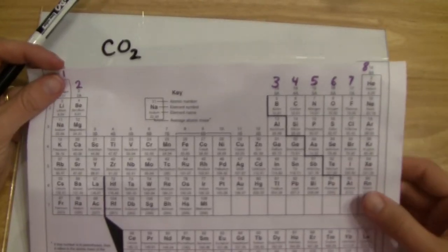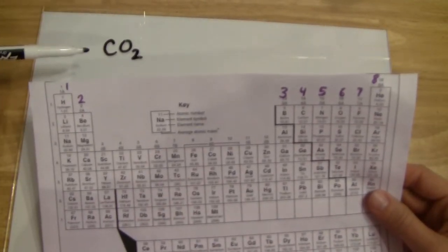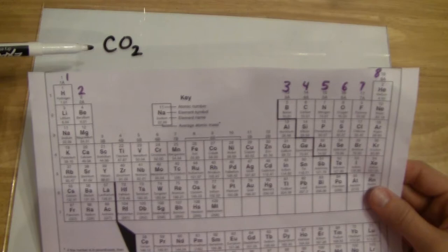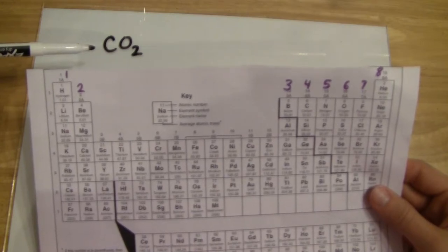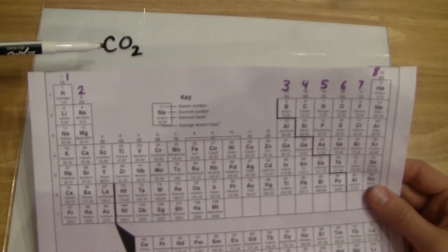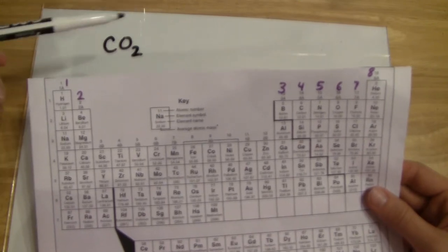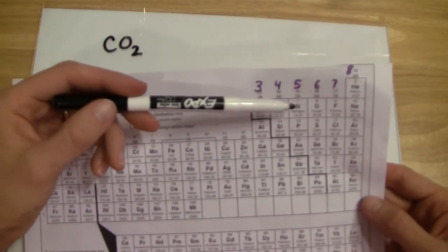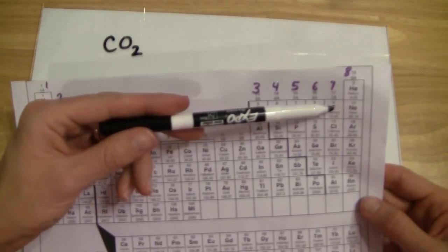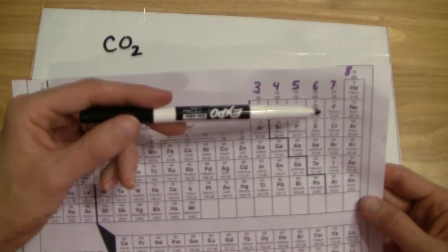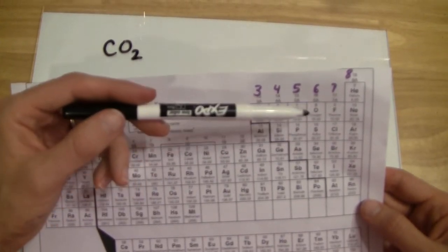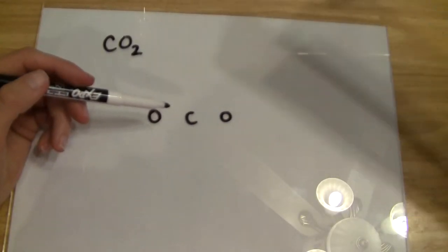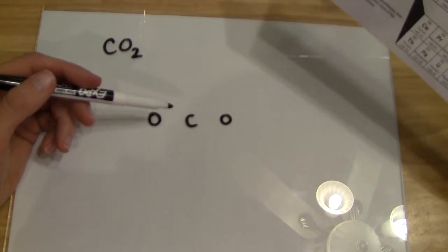Let's use the VSEPR theory to predict the electronic and molecular geometries of carbon dioxide. The first thing we have to do is draw a Lewis dot structure. To draw the Lewis dot structure, you need to figure out which atom is the least electronegative and put that in the center. Carbon versus oxygen — carbon is less electronegative. Electronegativity increases as you go across the periodic table, with fluorine being the most electronegative. So we put the carbon in the center, surrounded by the oxygens.